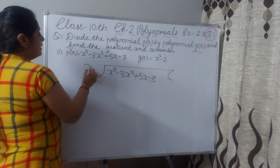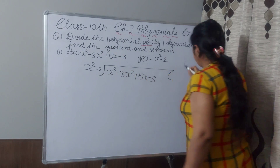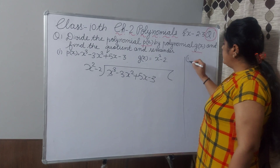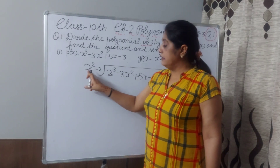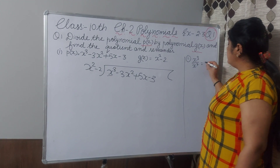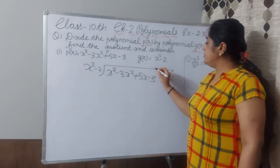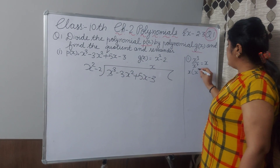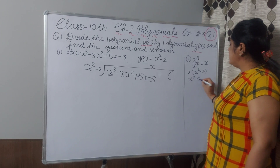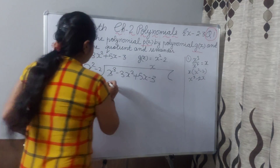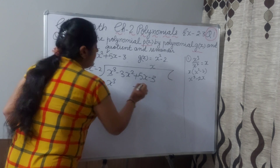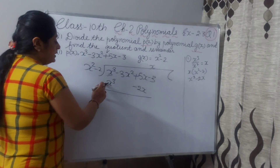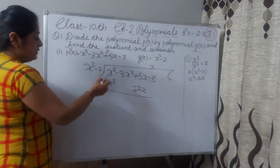We have to divide by x³ minus 2. Step 1: take the dividend's first term x³ and divide by the divisor's first term x². So you will get x. Write x in the quotient. Now you will get x³ minus 2x — write x³ minus 2x here. Next step is change the sign: positive becomes negative, negative becomes positive. Now this will be cancelled.